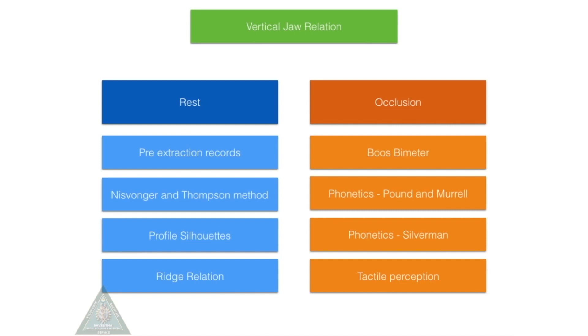The next is tactile perception, which is similar to Boos bimeter except that it is not a pressure-sensitive pin. The patient just reports whichever height between the two central bearing plates is comfortable, and that is the vertical dimension at occlusion.